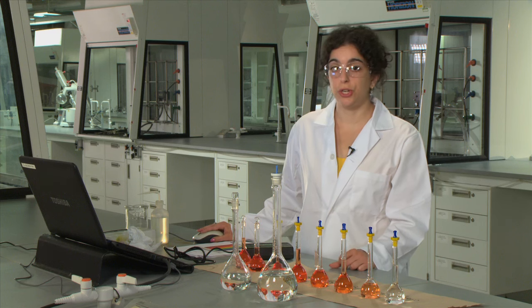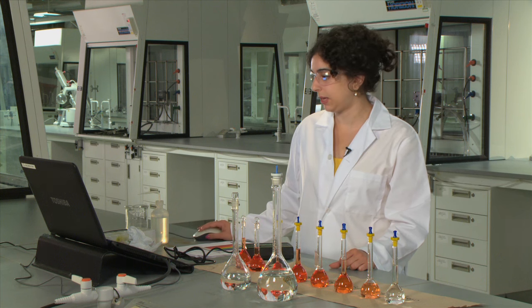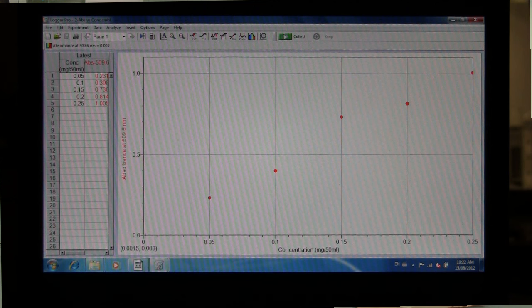When you finish running your calibration series, you'll get a graph that looks something like this. We're then going to have the program place a linear fit on our points. To do that, you're going to click on the button up here called Linear Fit.